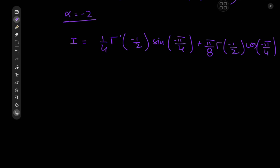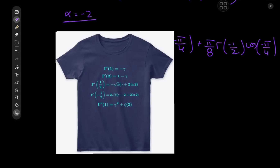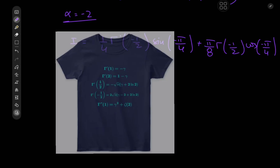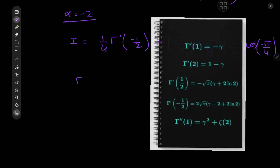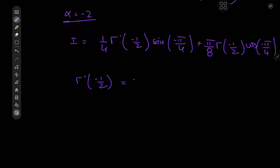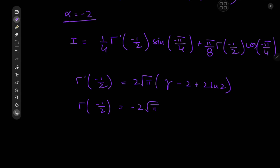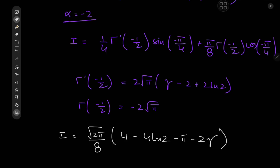We read off that Γ'(−1/2) equals 2√π times (γ − 2 + 2 log 2), where γ is the Euler–Mascheroni constant, and Γ(−1/2) equals −2√π. With some algebra applied to these values, we arrive at an absolutely gorgeous closed form for our target integral.